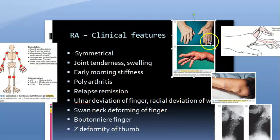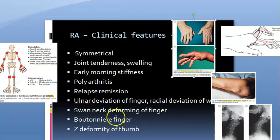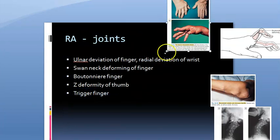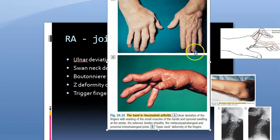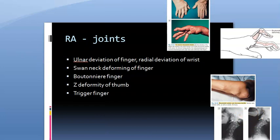Just by looking at the hand you can identify so many features of rheumatoid arthritis. Trigger finger can also occur because of nodules in the flexor tendon sheath — there are many nodules in these patients.